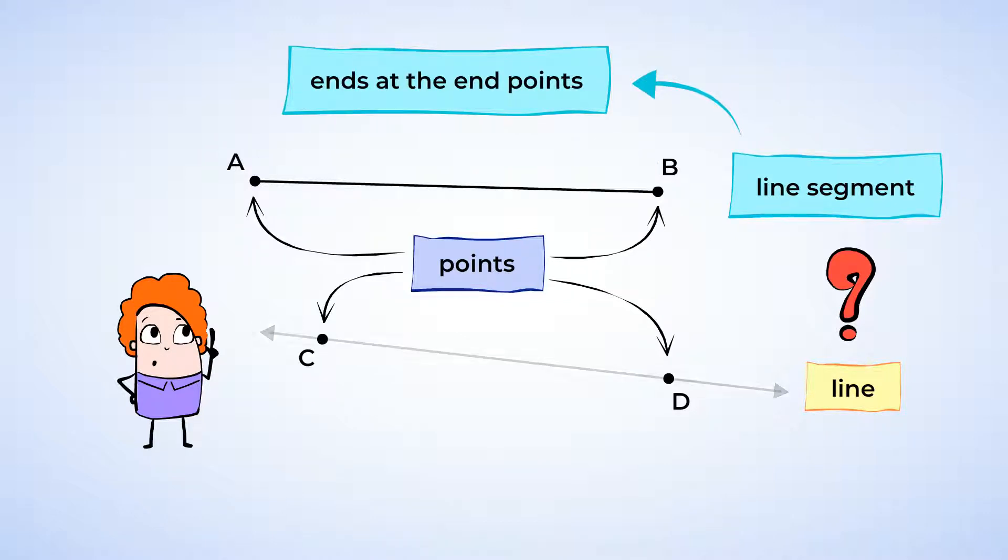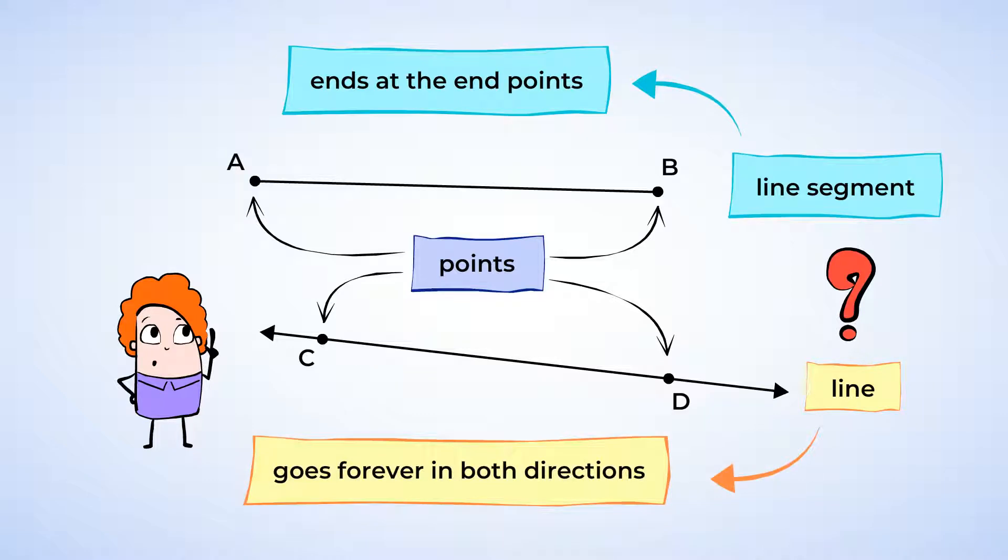If we were to connect points C and D with a line, notice that the ends have arrows. This indicates that the line keeps going. A line goes on forever in both directions.